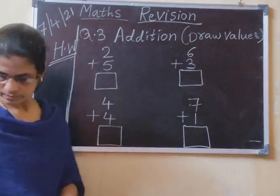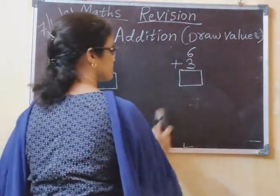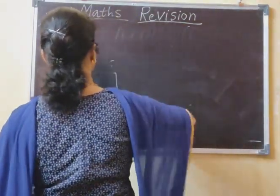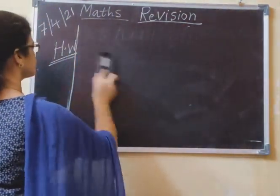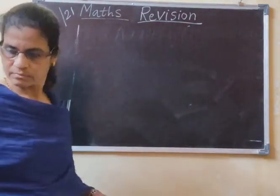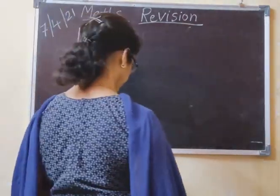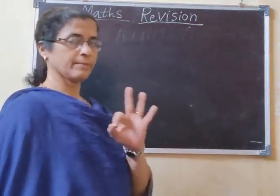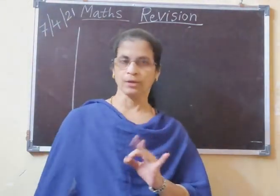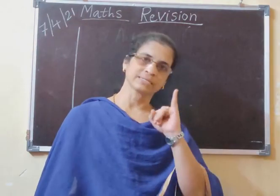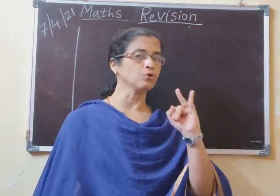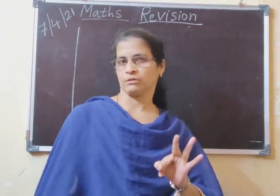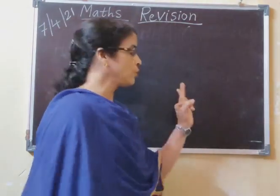Understood all of you? Homework: three questions. Question number one — write missing numbers. Question number two — complete the given table. Question number three — addition.